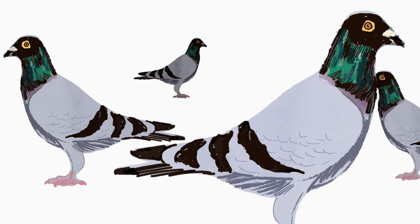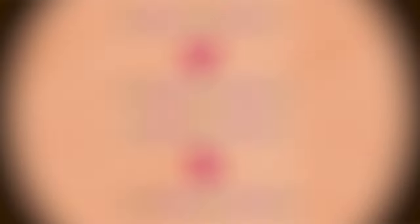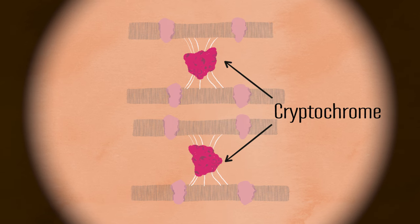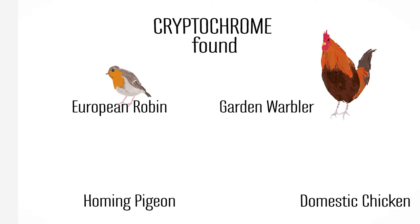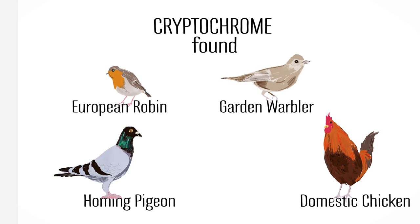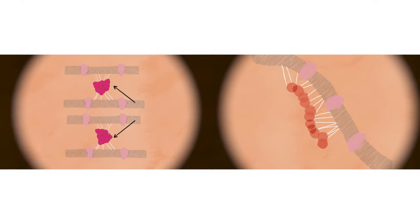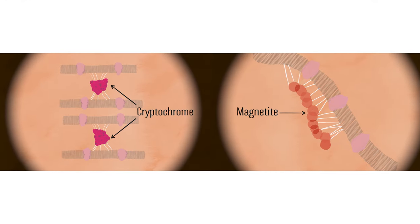The other theory is that animals possess a protein in their eyes called cryptochrome, which allows them to see magnetic fields. Cryptochrome has been found in the eyes of several migratory birds, but we haven't proven either theory for a few reasons.